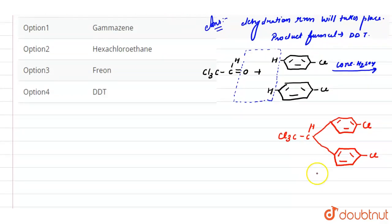So this product we get here is DDT. The full form of DDT is dichlorodiphenyl trichloroethane.